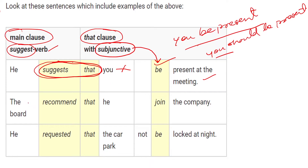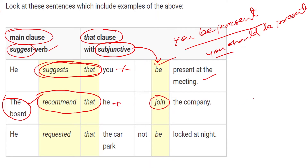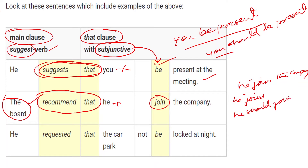Look at the second sentence: 'The board recommends that he join the company.' The board is considered as a plural noun, so 'recommend.' He plus join. In normal English we can't use 'he join' but 'he joins,' or we can say 'he should join.' But as the main clause contains 'recommend that,' we are forced to use the Subjunctive form of verb.